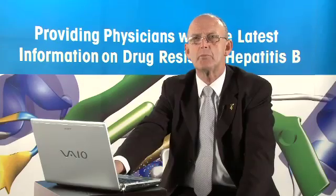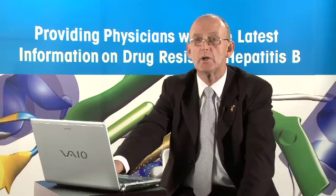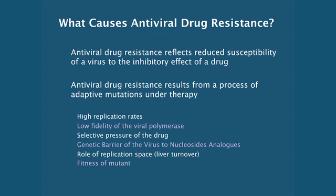The first question I'm often asked about resistance is: how do you define antiviral drug resistance? Antiviral drug resistance reflects the reduced susceptibility of a virus to the inhibitory effect of the antiviral compound. In hepatitis B, antiviral drug resistance comes about from a process of adaptive mutations during antiviral therapy.